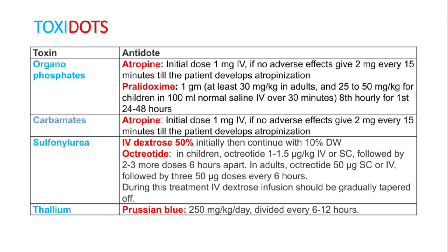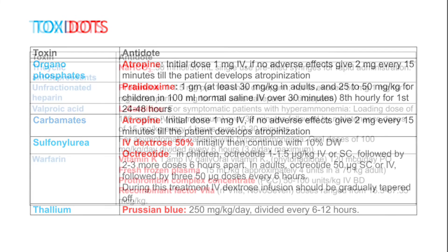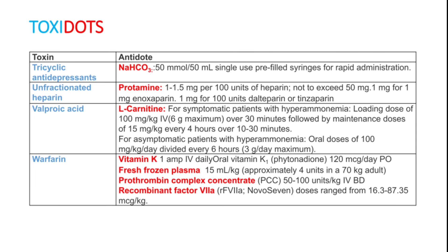Thallium toxin is very rare. Prussian blue — 250 mg per kg body weight divided every 6 hours — is the antidote. Tricyclic antidepressants are a very common problem in toxicology. Sodium bicarbonate — 50 mmol in 50 ml single-use pre-filled syringes for rapid administration, or 50 ml of 8.4% sodium bicarbonate — can be given.